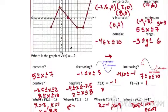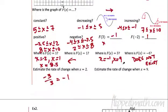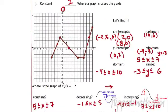Estimate the rate of change when x equals nine. x equals nine right here — what's the rate of change? How do you get to the next point? You have to go up three over one — so up three over one, it's about three. Notice here it's negative, here it's positive. Negative means we're decreasing, we're going downhill. Positive means we're increasing, we're going uphill.